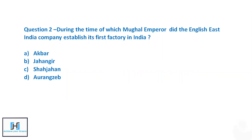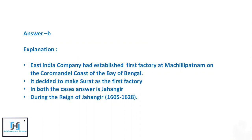Question 2: During the reign of which Mughal Emperor did the English East India Company establish its first factory in India? Options are Akbar, Jahangir, Shah Jahan, or Aurangzeb. Akbar's death was in 1605, and while some travellers came during his time, no factory was established then. The first EIC factories at Surat and Machilipatnam were established between 1612 and 1630, during Jahangir's reign. So the answer is Jahangir.